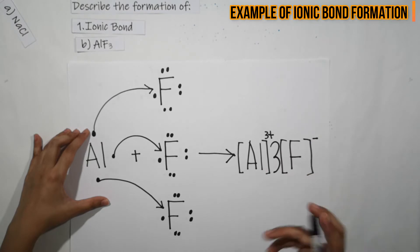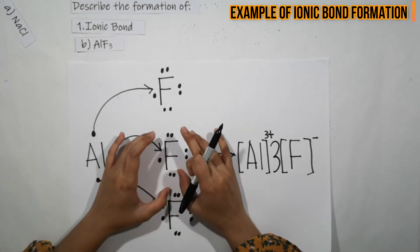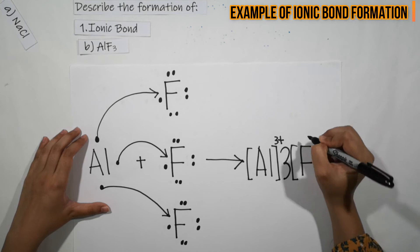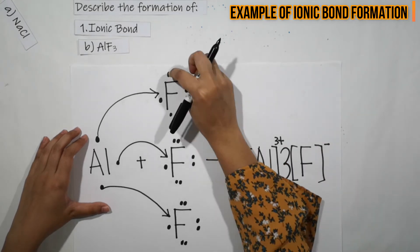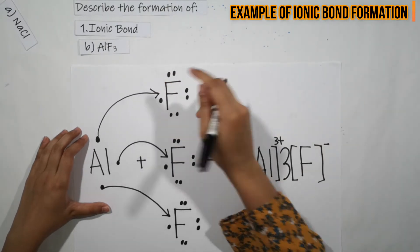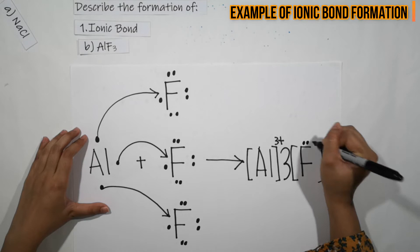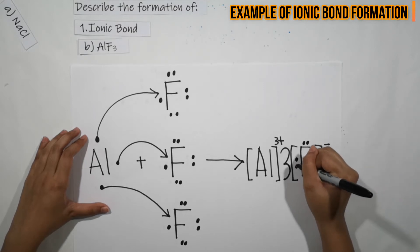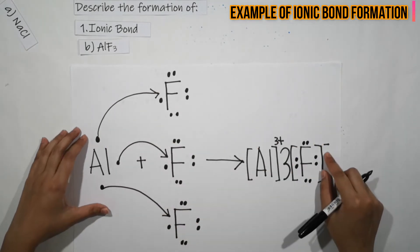Kita tak boleh letak 3F kat sini macam nak short form. Jangan letak 3F kat sini. And also, jangan lupa to put lone pair here. Since this F ada 7 valence electrons, tapi because they accept 1 valence electron daripada Al ni, makanya kita tuliskan valence electron ni, which is ada 8. Kenapa dapat 8? Because 1 tu dia terima daripada Al.